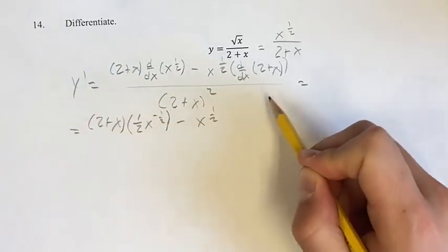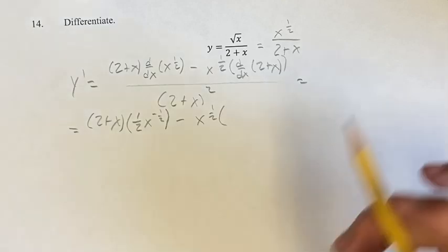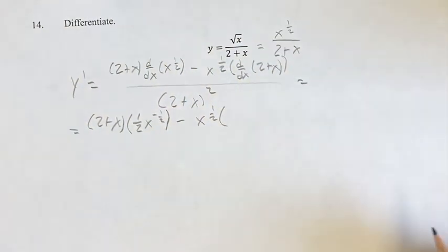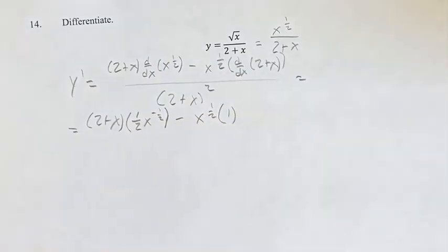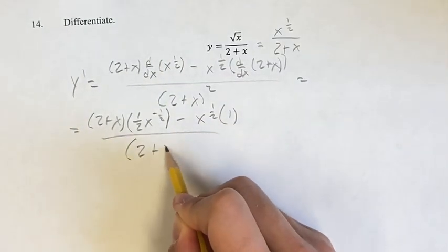Minus x to the 1 half times the derivative of 2 is just 0, since 2 is a constant. Plus, we have this linear term x right here. The derivative of that is going to be its coefficient, which is the 1 that is always present when you don't have a coefficient written. The derivative of 2 plus x is just going to be 1. This is all over 2 plus x squared.